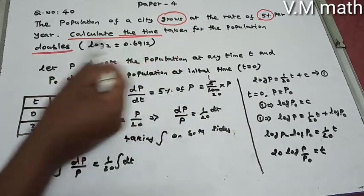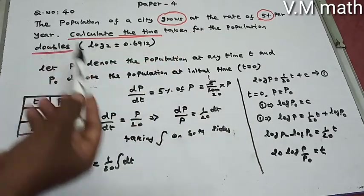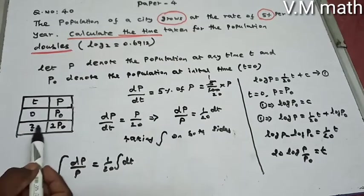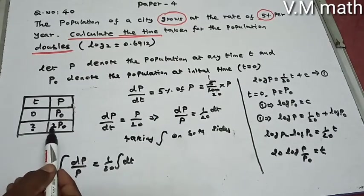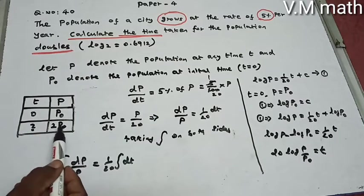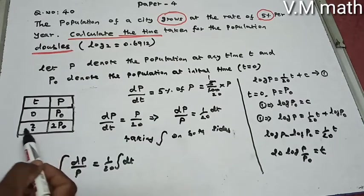When the population doubles, P equals 2 times P0. We need to find the time T at which this occurs.